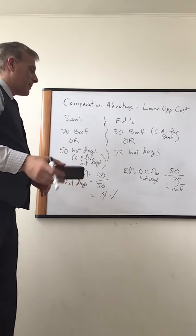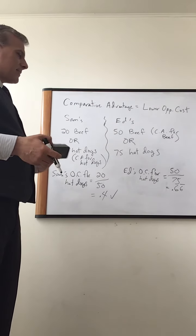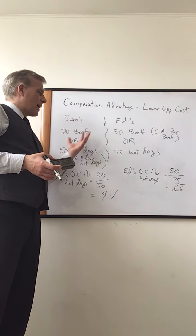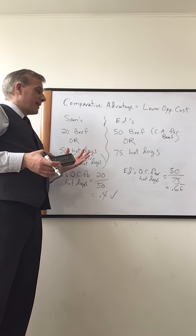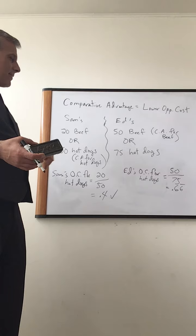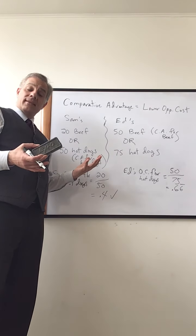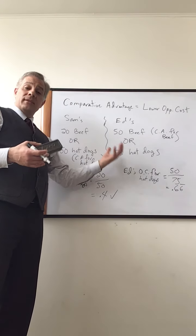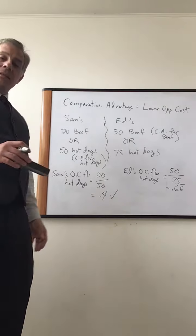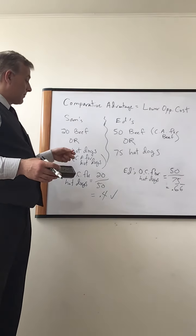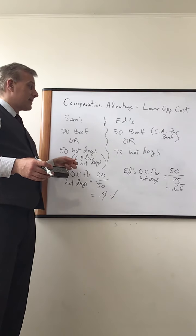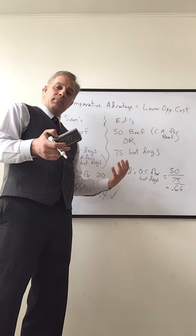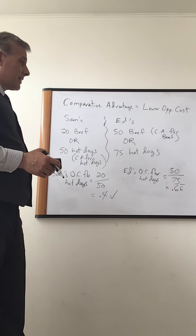Okay. Now, if this comes up in some type of question, if Ed and Sam did some type of cooperating venture, they could increase, so as they have it, there's a certain production possibilities that they're capable of. Well, they're capable of producing more if they manipulate and specialize. So if Sam specialized in hot dogs and Ed specialized in beef, they could together produce more than either of them could produce individually.